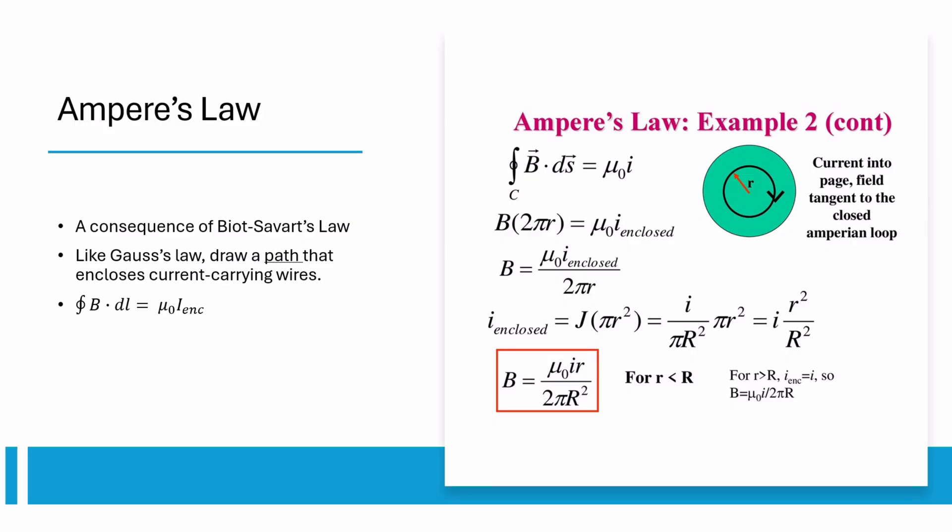Then you can use ratios to find the enclosed current, and we can see that B-field in a wire is proportional to radius.